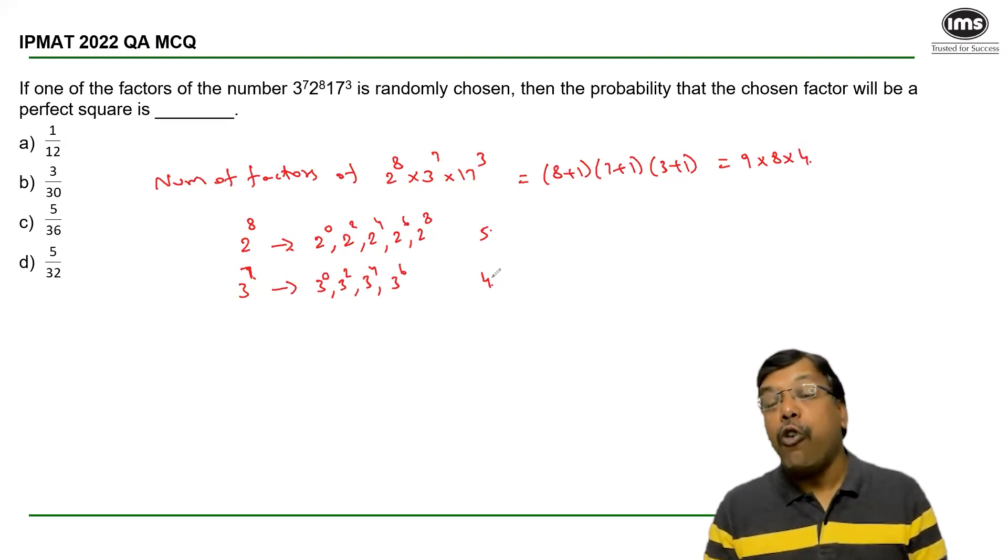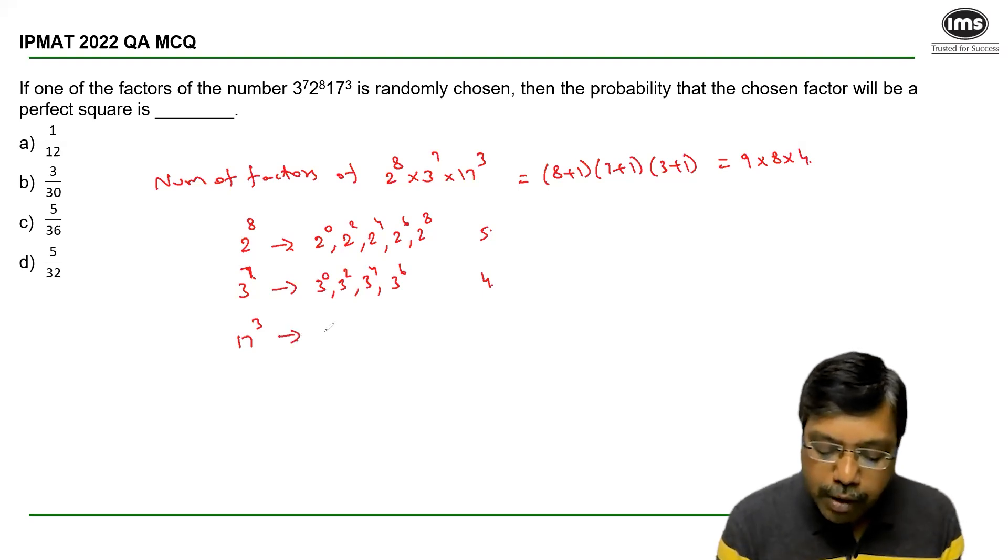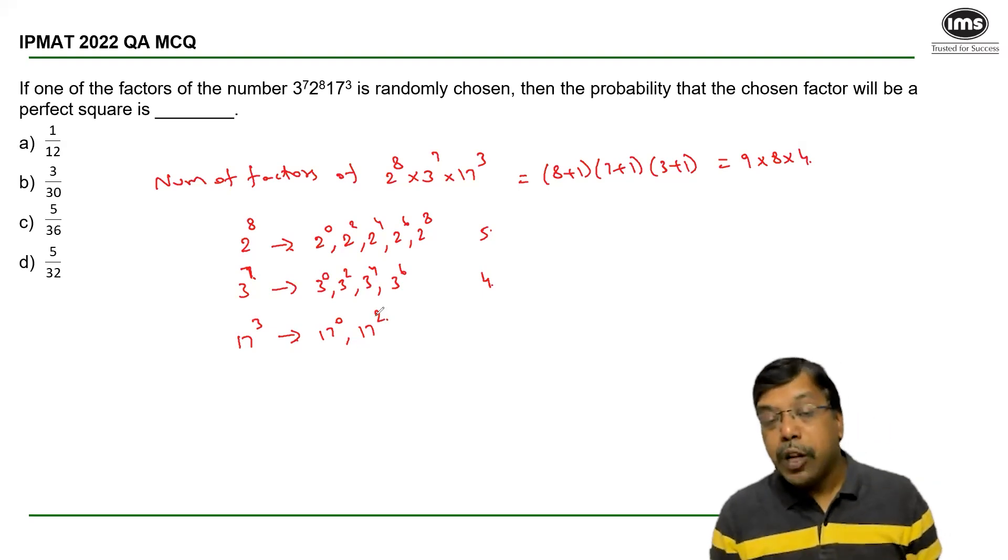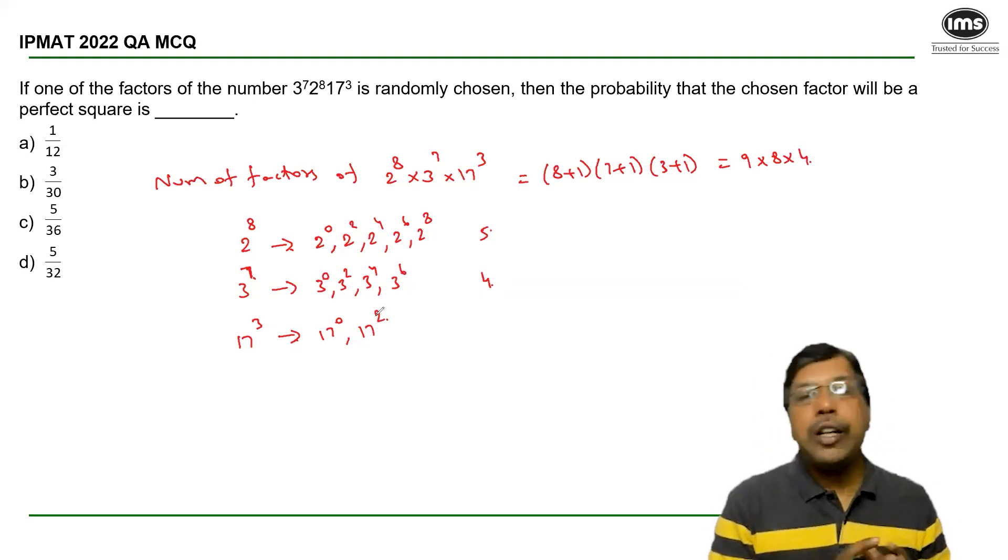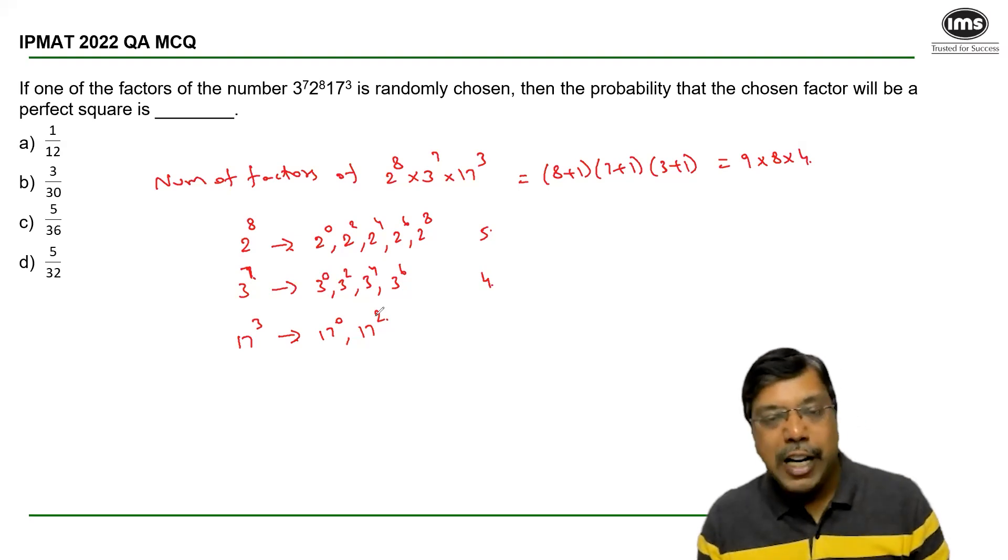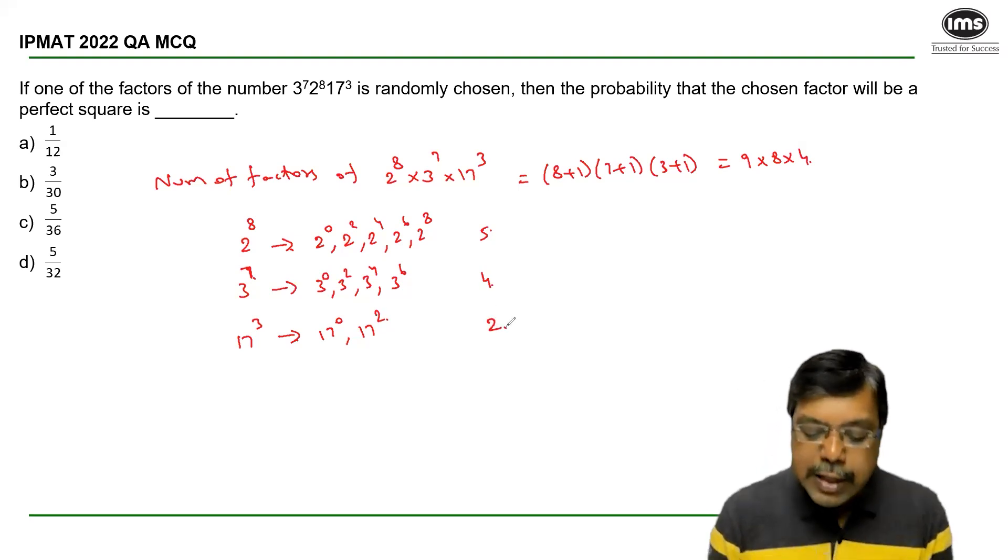So, there are 4 different possibilities. And 17^3, 17^0 and 17^2 will be the 2 factors which are perfect square among the various factors of 17^3. So, there are 2 combinations possible.